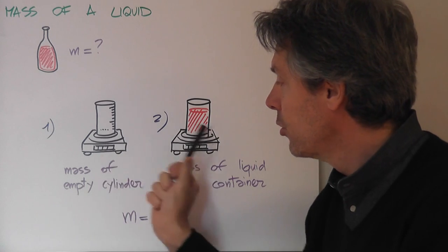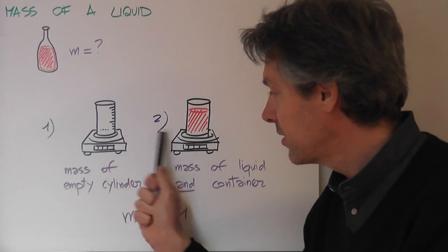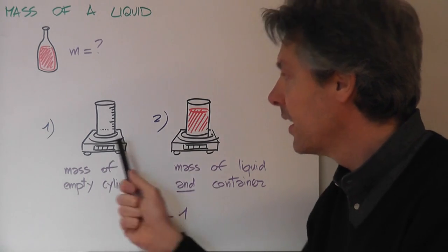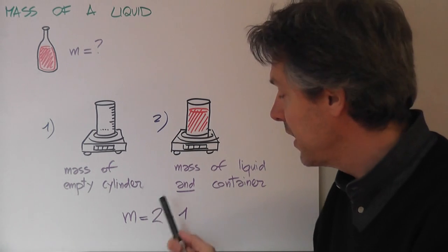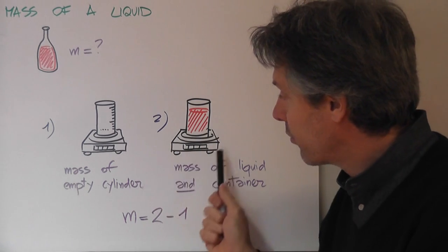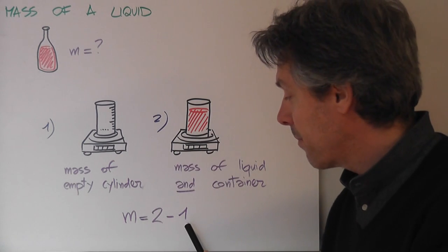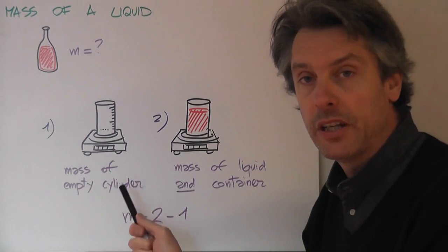And, at this point, you compare these two readings, these two measurements of mass, and again, the mass of the liquid will be mass of reading number 2, minus mass of reading number 1.